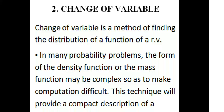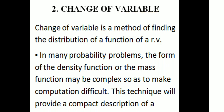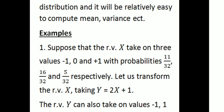We will start with the next chapter. Change of variable is a method of finding the distribution of a function of a random variable. In many probability problems, the forms of the density function or the mass function may be complex, so as to make computation difficult. This technique will provide a compact description of a distribution and it will be relatively easy to compute mean, variance, etc.